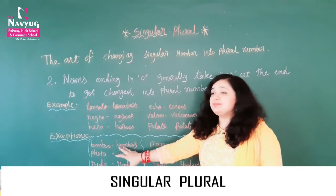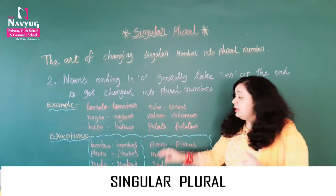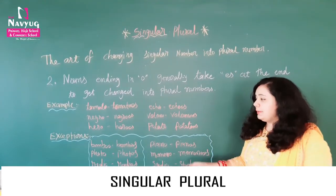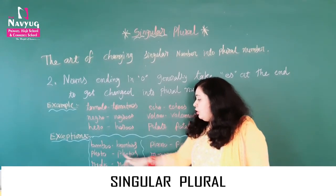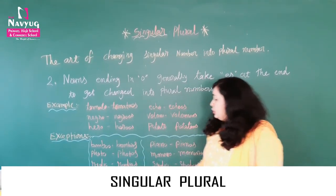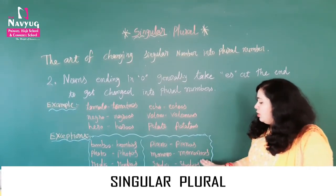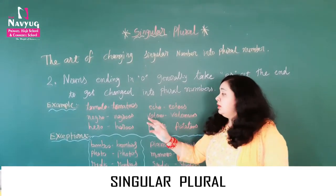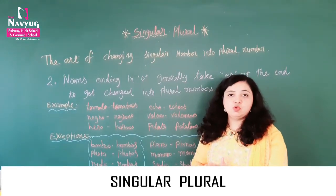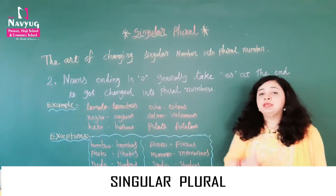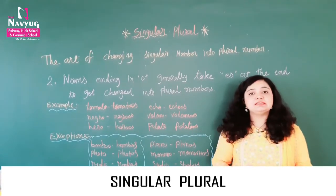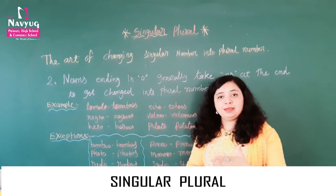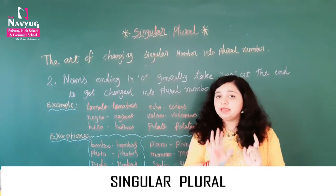These words you have to memorize and remember — that even though a word ends in O, if it is an exception, then ES is added to form the plural. The plural forms of such nouns you have to memorize and remember.